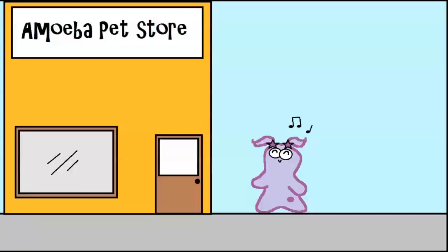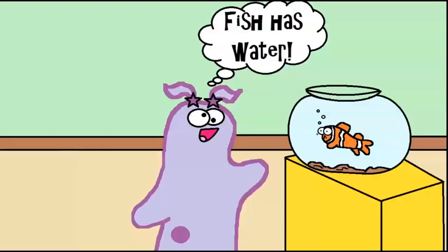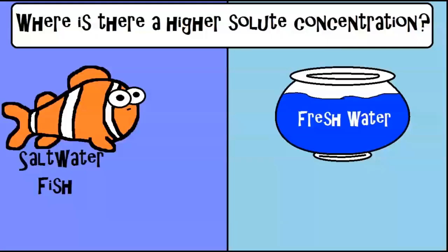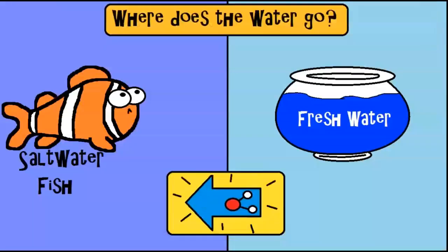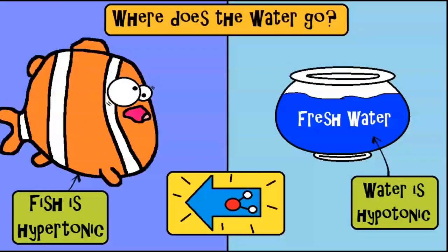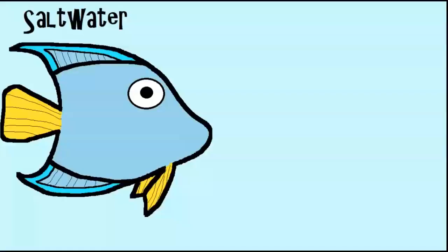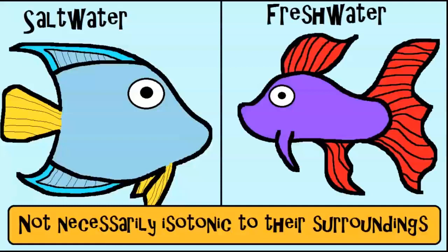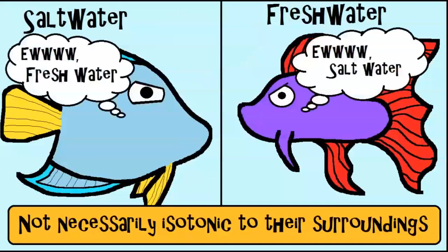Say you go to a pet store and get a fish like Nemo from Finding Nemo — a clownfish — but you don't know it's a saltwater fish. What would happen if you placed this saltwater fish in freshwater? First, ask yourself: where is there a higher solute concentration — in the saltwater fish cells, or in the freshwater? Definitely in the saltwater fish cells. So where does the water go? It goes to the area of greater solute concentration, the hypertonic side — into that poor fish. The cells would start swelling, and eventually the fish could die. Now, saltwater fish and freshwater fish are not necessarily isotonic to their surroundings, but they have special adaptations that allow them to live in their environment. Usually they can't make a major switch from a saltwater environment to a freshwater environment.